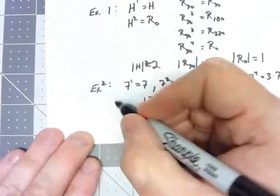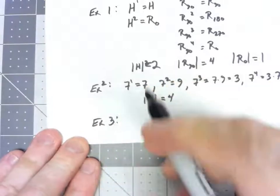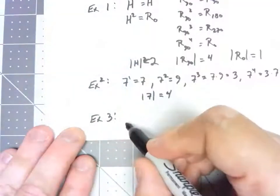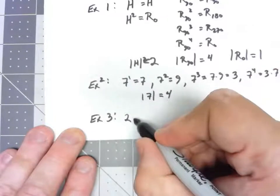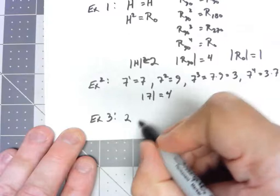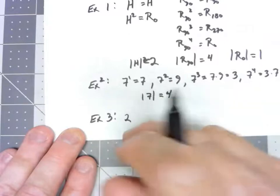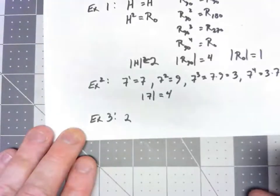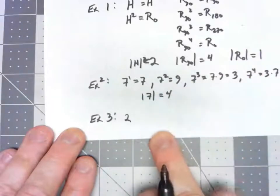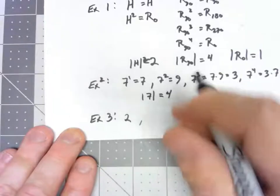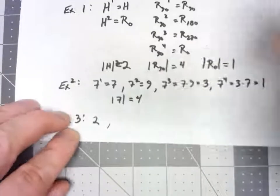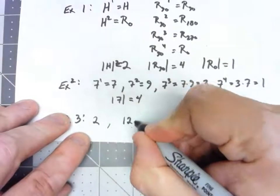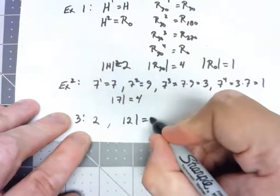Now, the last example, we were looking at the integers under addition. But if I take 2, I don't care how many times I'm going to add 2 to that, I'm always going to get bigger and bigger numbers. There's no way I'm ever going to come back to a 0. So in that case, just like we said the order of that group was infinity, we're going to say the order of that element is also infinity.